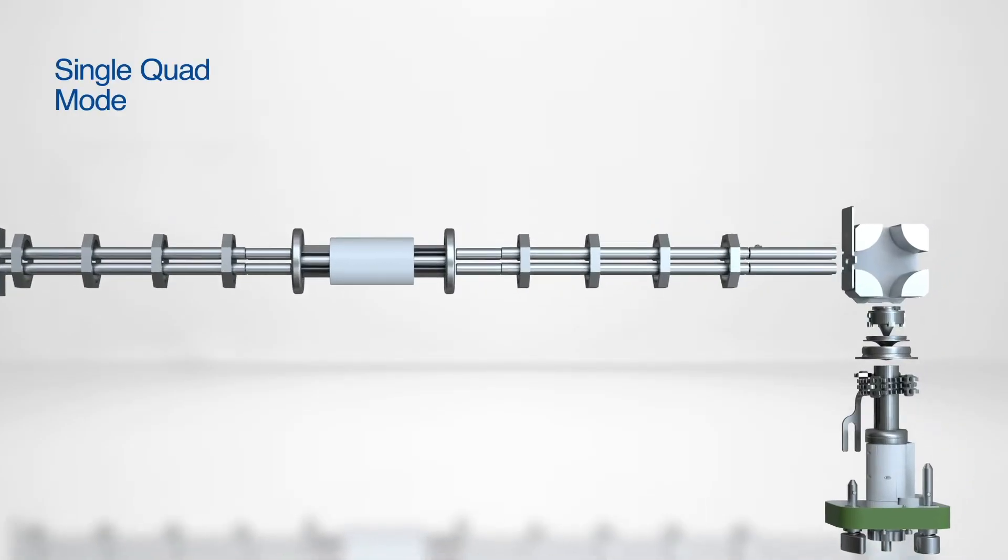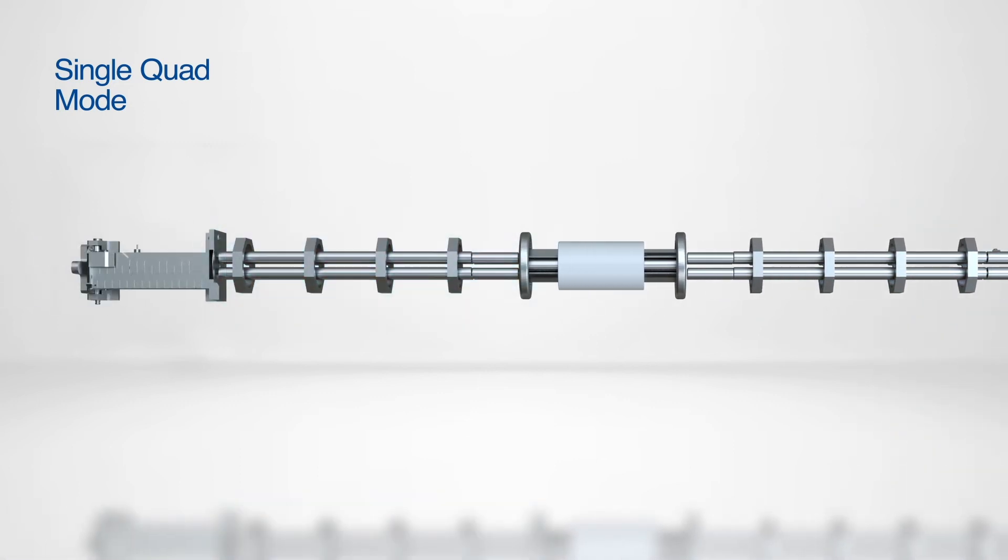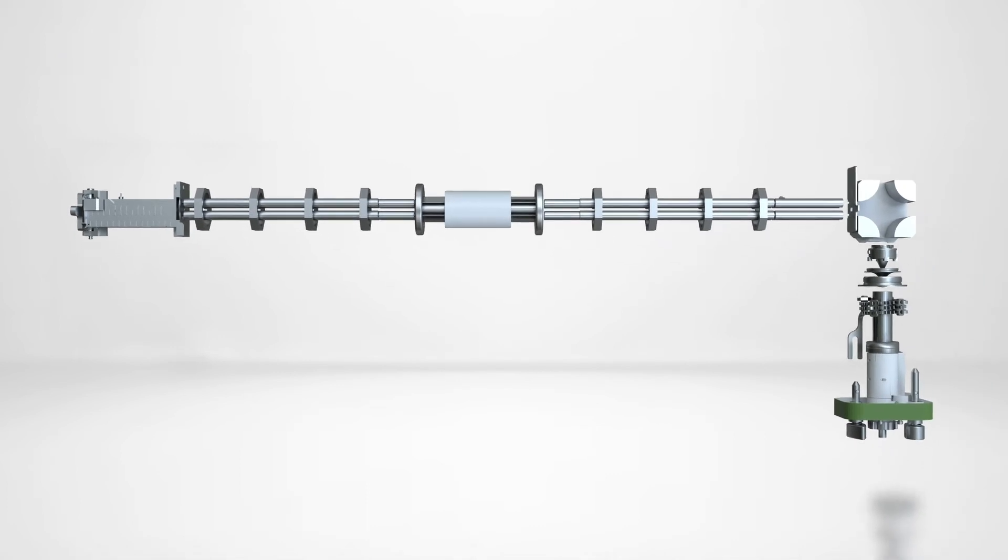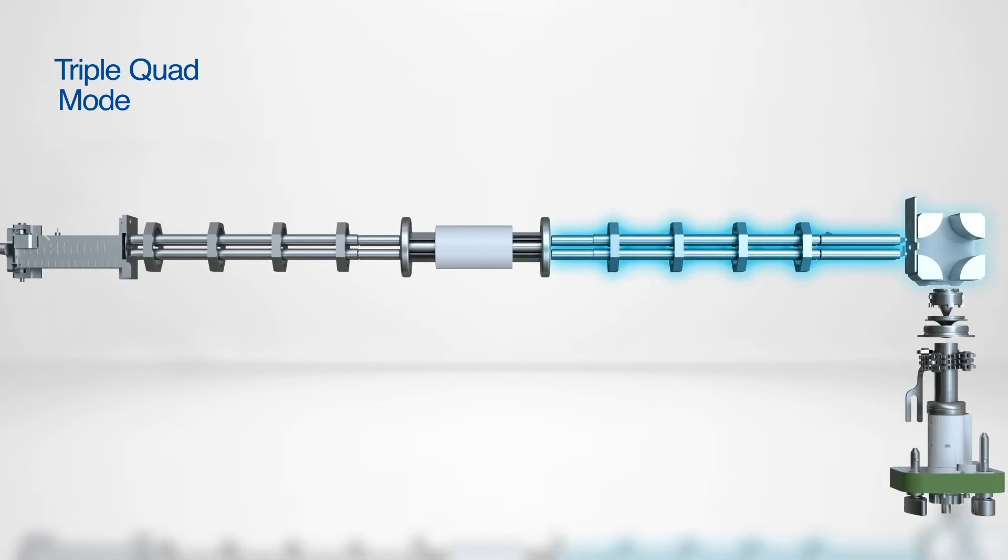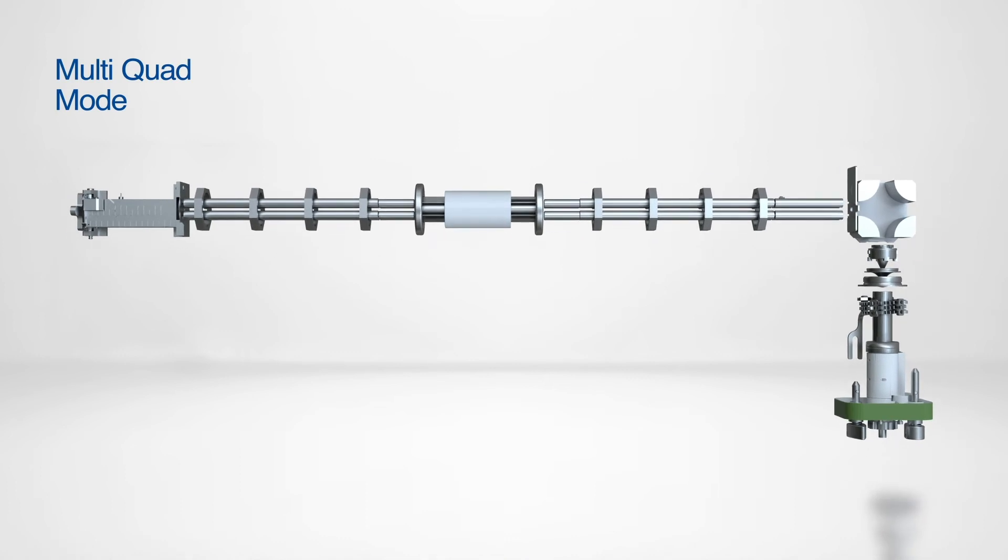In single quad mode, either Q1 or Q3 can be used as the analyzer quadrupole, delivering phenomenal, abundant sensitivity. In triple quad mode, the ions are controlled in both Q1 and Q3. And in multi-quad mode, the ions are controlled in Q1, Q2, and Q3.